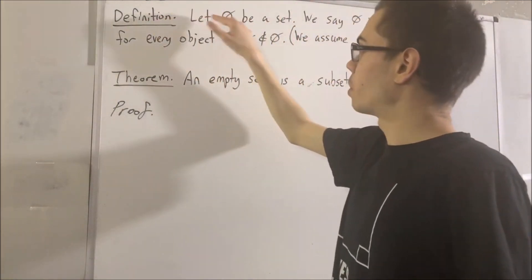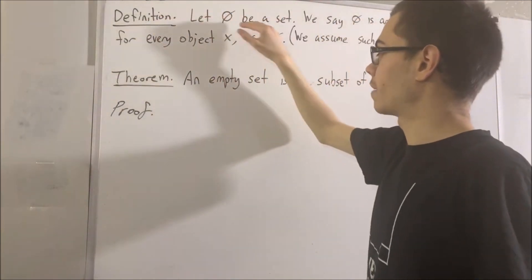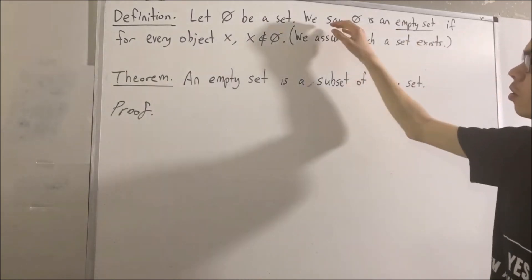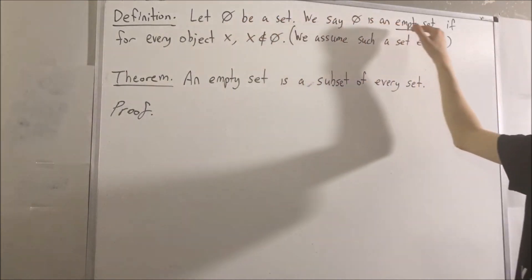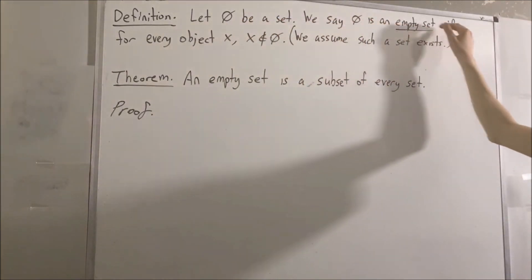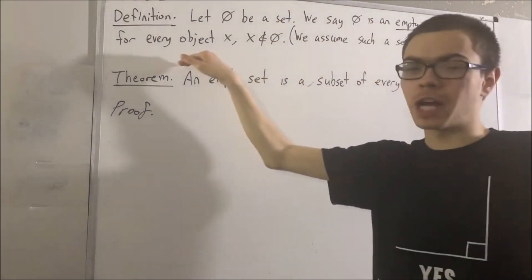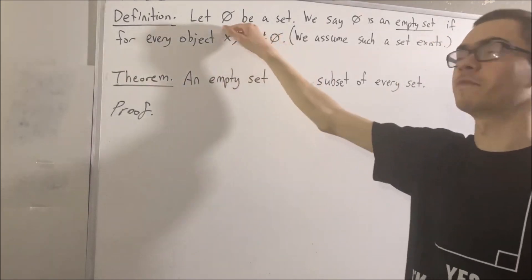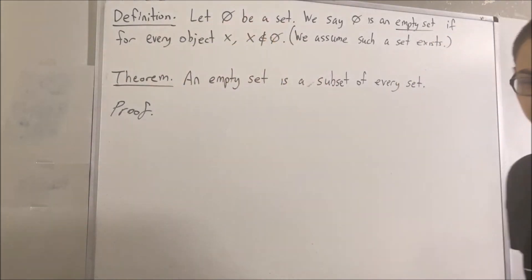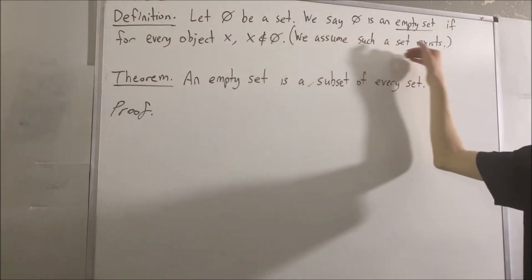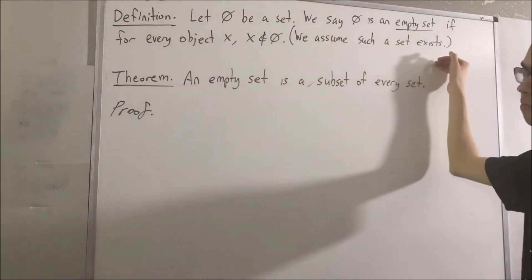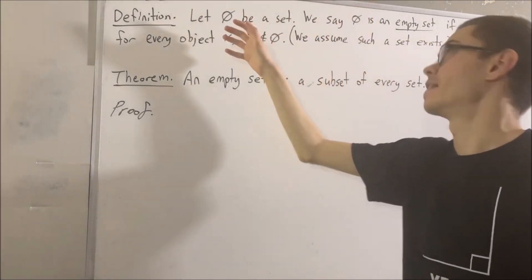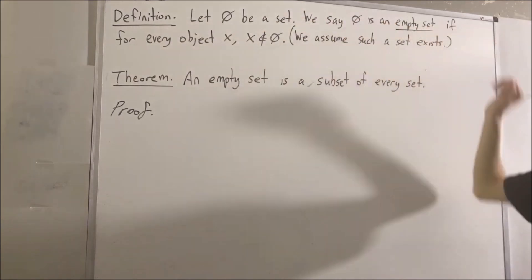Definition. Suppose we have a set. We say that this set is an empty set if, for every object x, x is not an element of that set. And we assume that such a set exists — we assume that there is, in fact, a set that is an empty set.